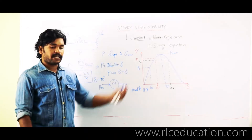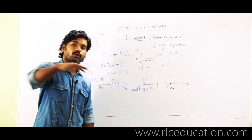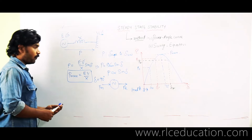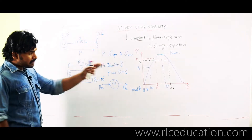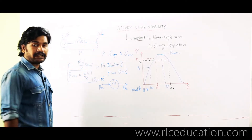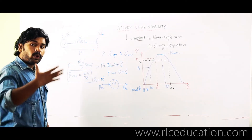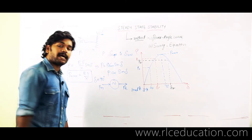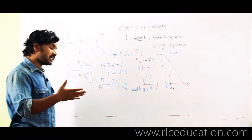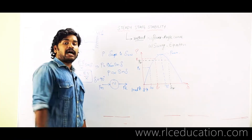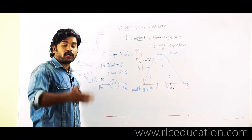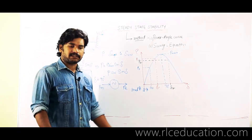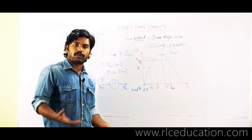That means the generator has entered into the unstable zone of operation. Therefore, from this particular power angle curve, I can say what is the maximum amount of load that I can apply on a particular generator before it is driven into an unstable state, or what I can call loss of synchronism.